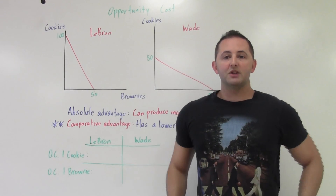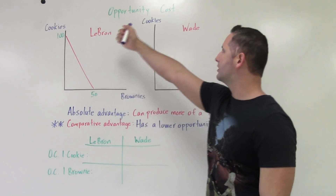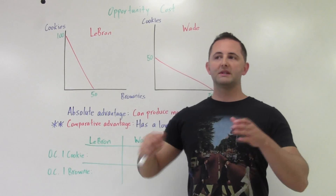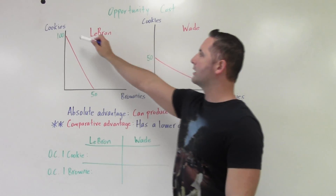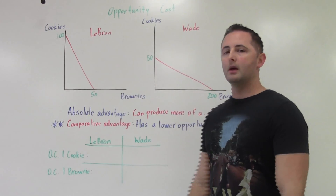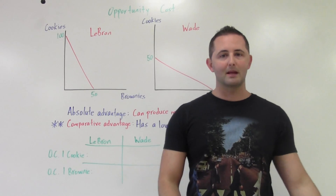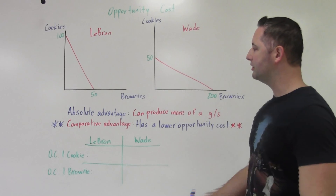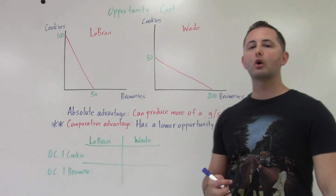The thing about absolute advantage is that it doesn't matter as much, especially because in many questions you'll see one person or one country that's better at both things. For example, LeBron could make 100 cookies or 400 brownies, making him better at both. That doesn't mean LeBron should do everything and Wade should do nothing — that's not very productive. What tells us who should do what is who has the comparative advantage, meaning who has the lower opportunity cost.